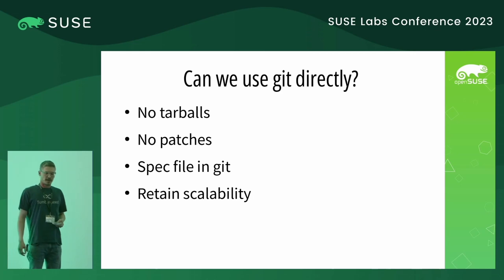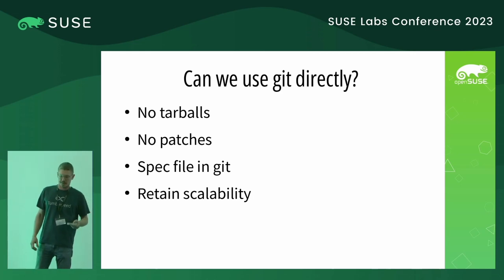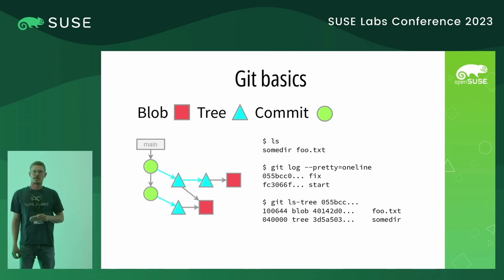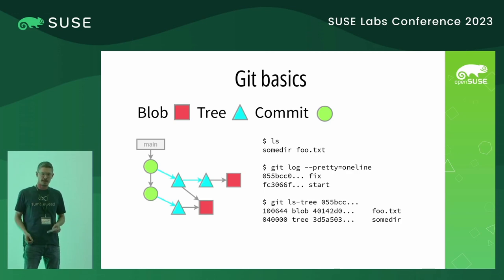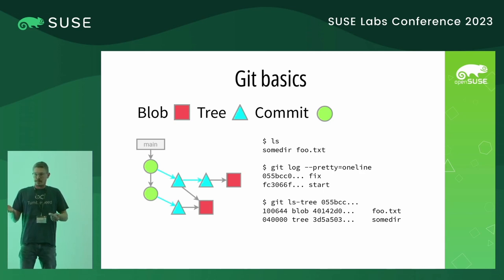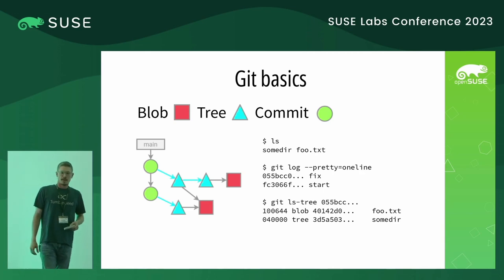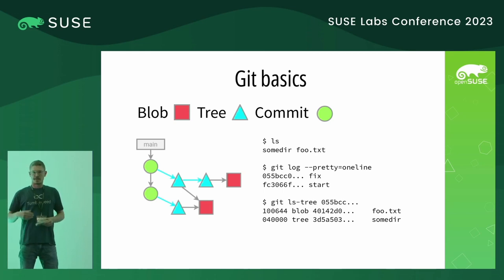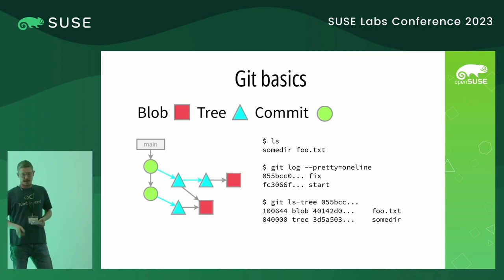But first let's take a look at how Git works internally. Some Git basics: Git has three objects — blob, tree, and commit. A blob is the actual file content. A tree is a directory listing that can either give a name to a blob or refer to another tree. A commit has a message, an author, a date, and specifies which trees it uses. By linking and chaining commits, you walk the history with those.